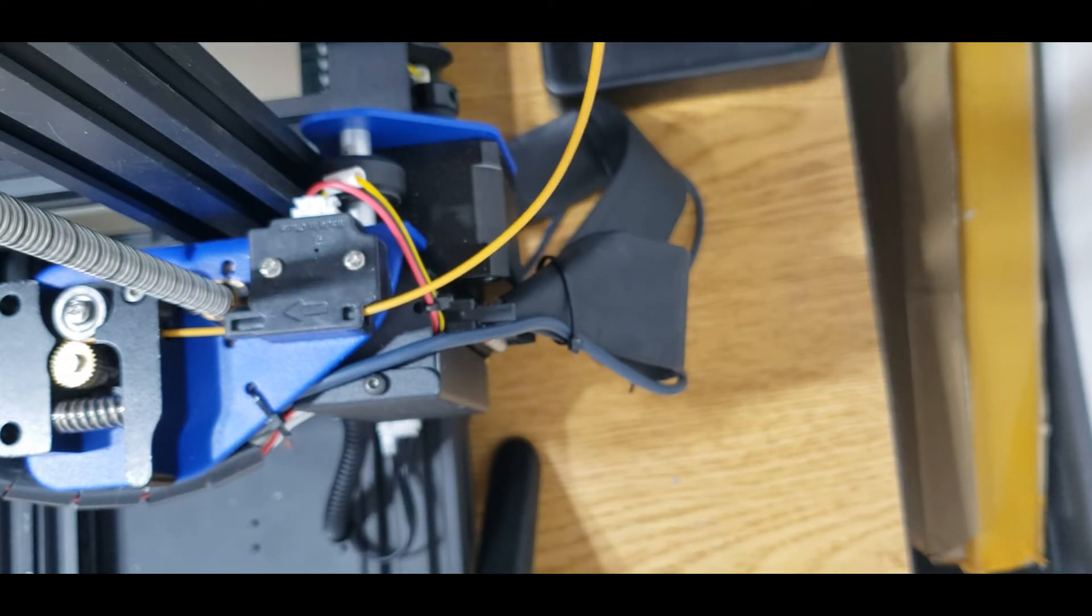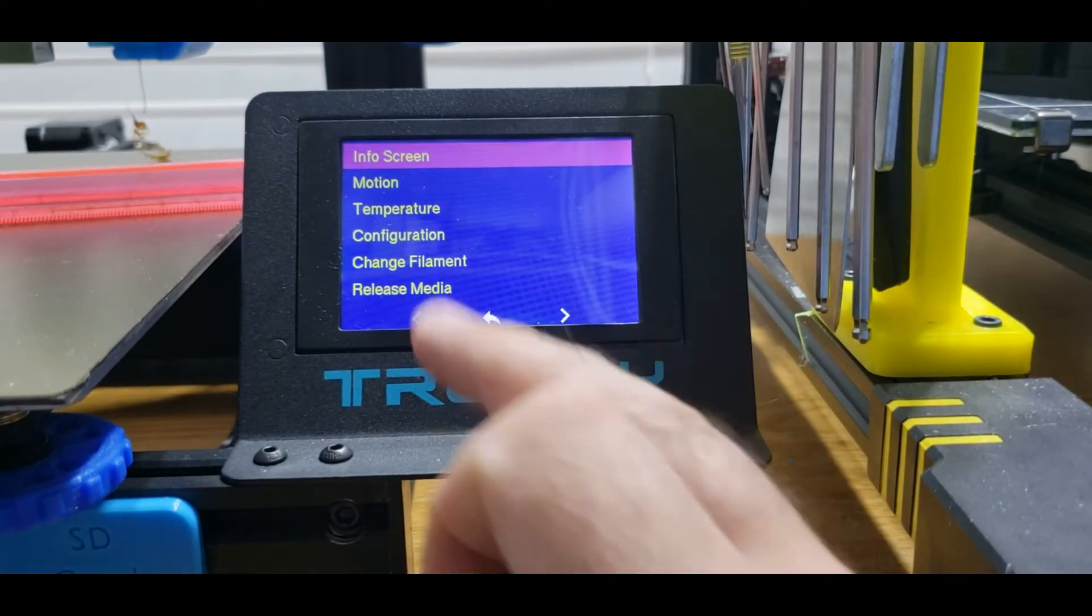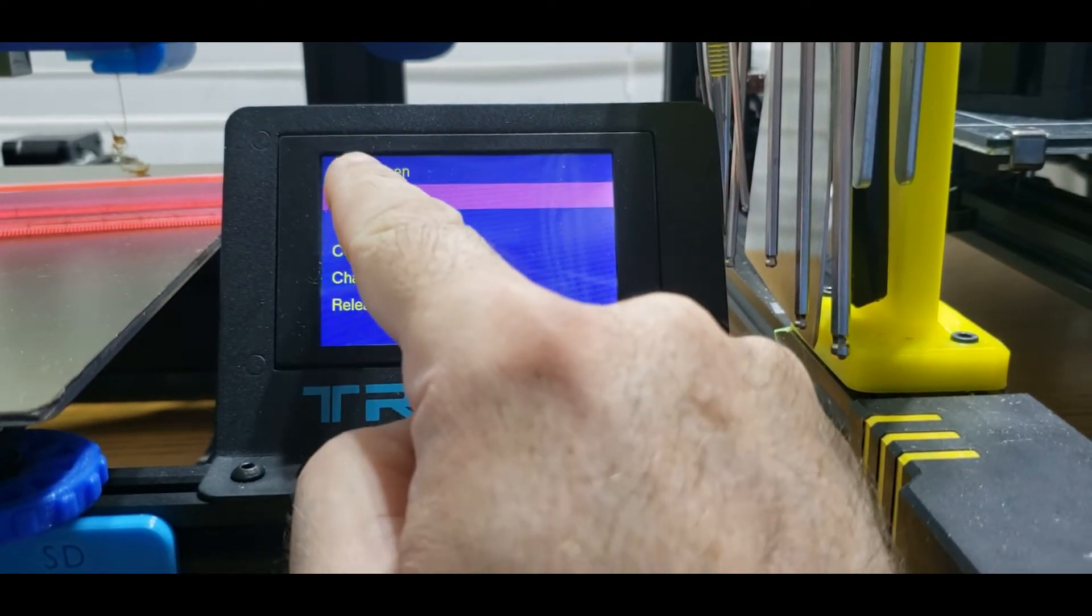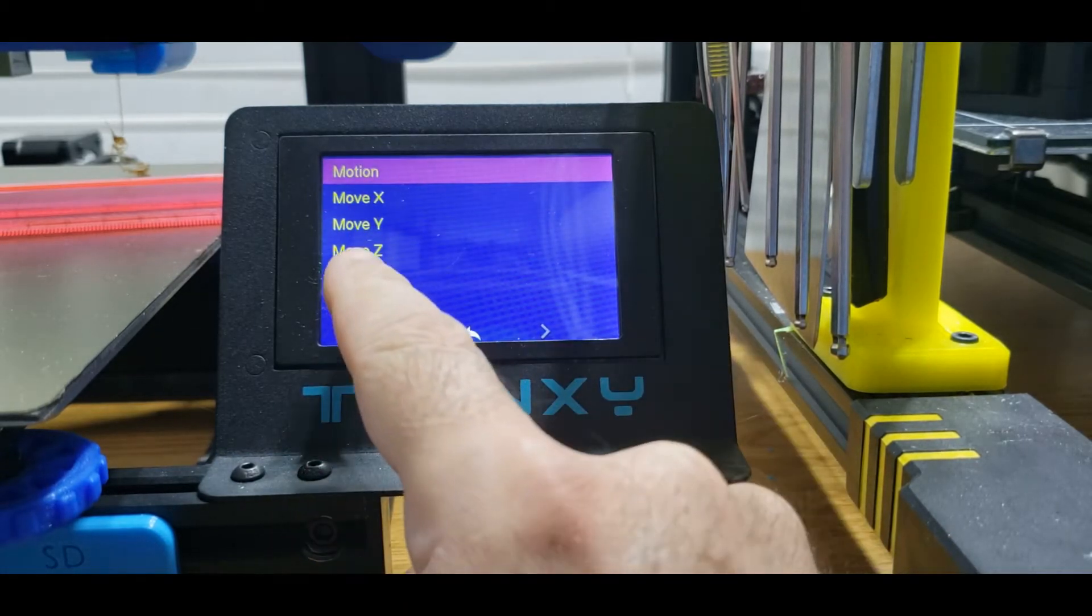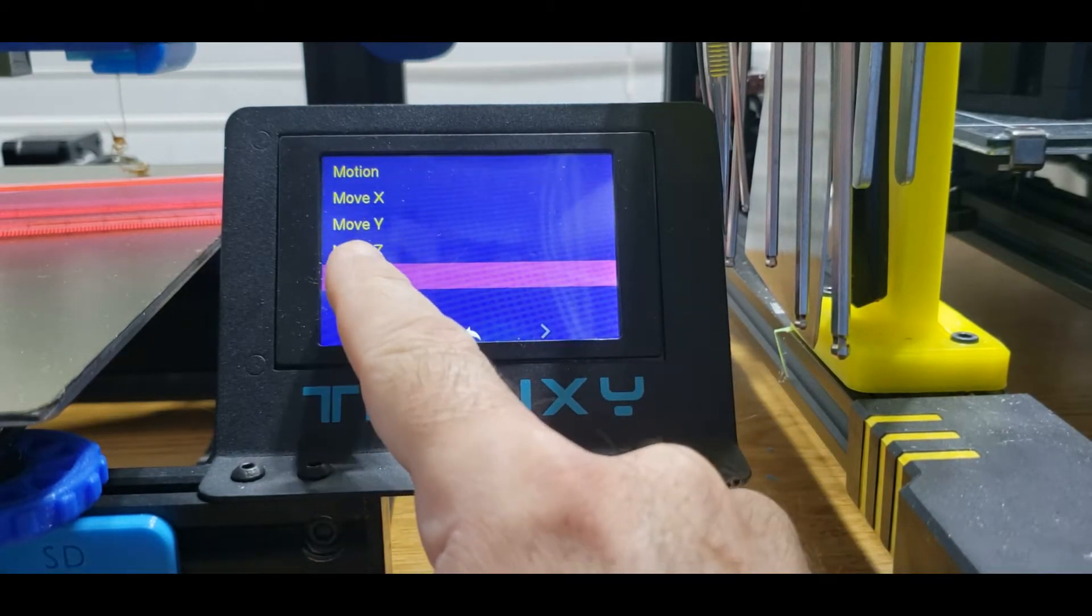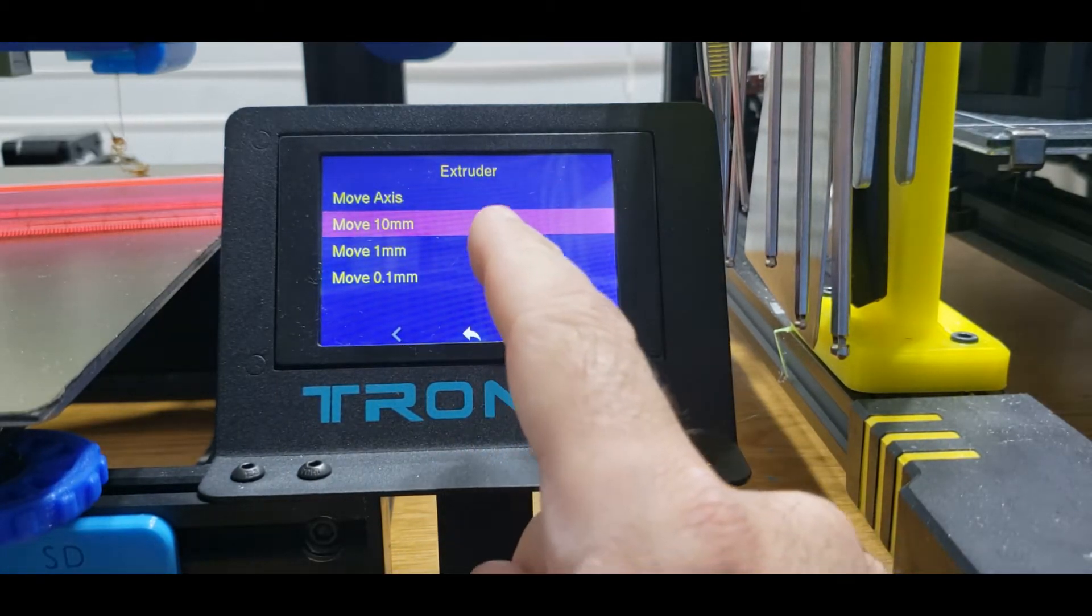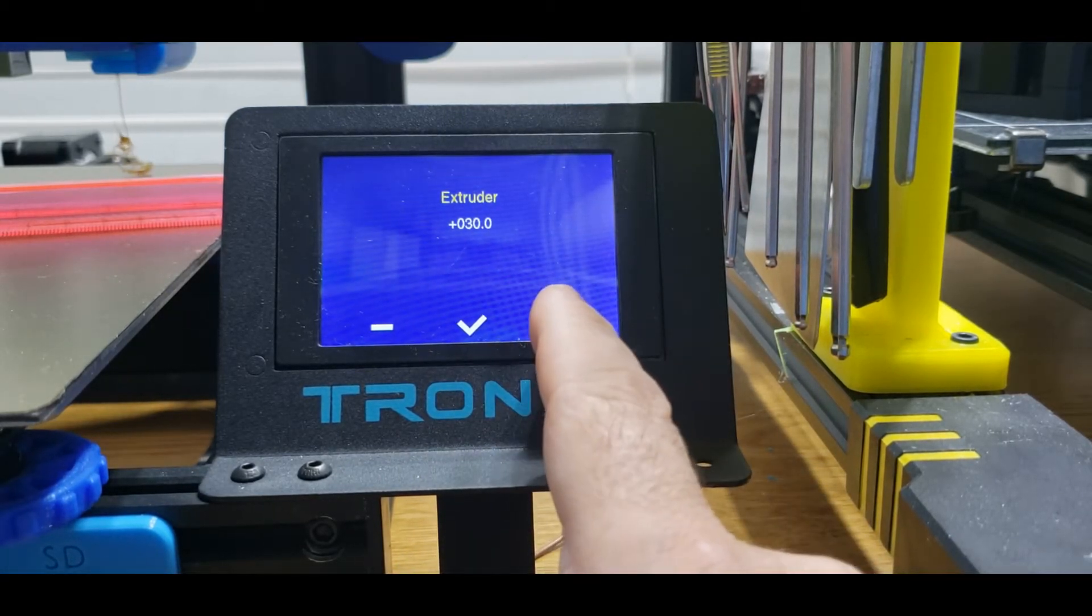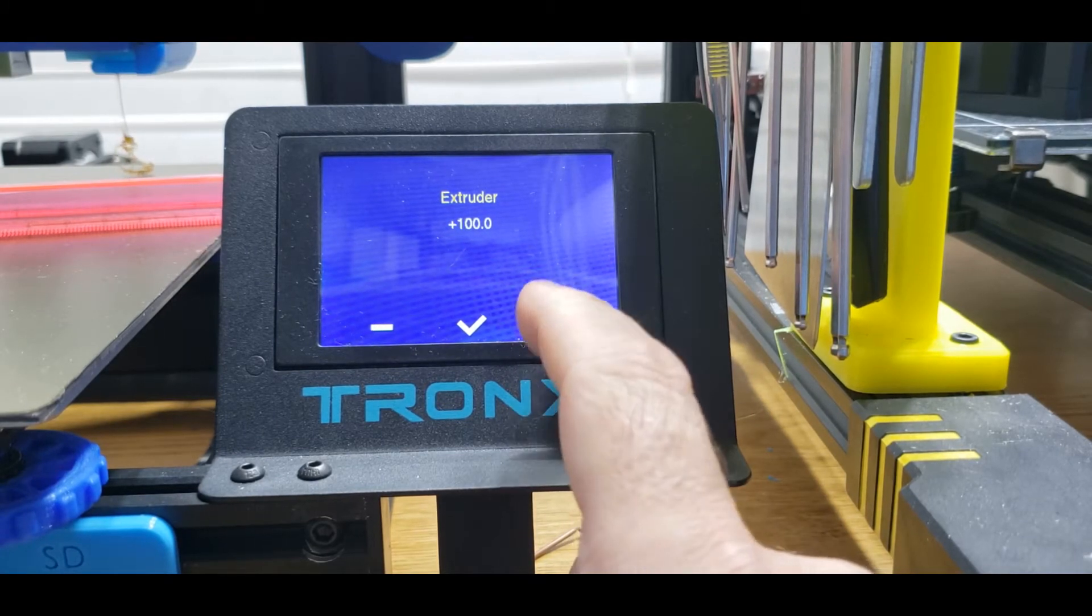Now that my hot end is heated up, I'm going to go to Settings, Motion, Move Axis, Extruder, and what I want to do is move 10 mils, 10 times for 100. So that's 130, 40, 50, 60, 70, 80, 90, 100.